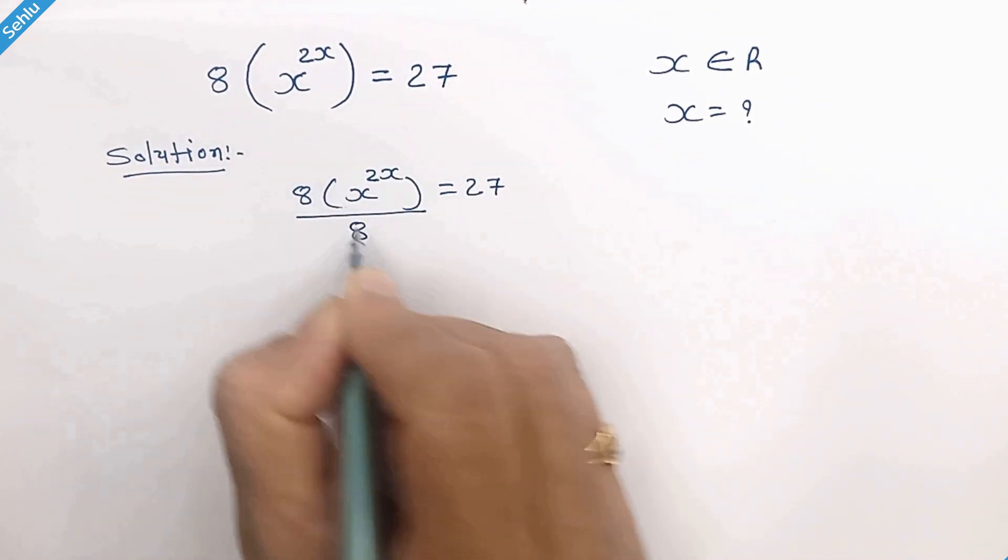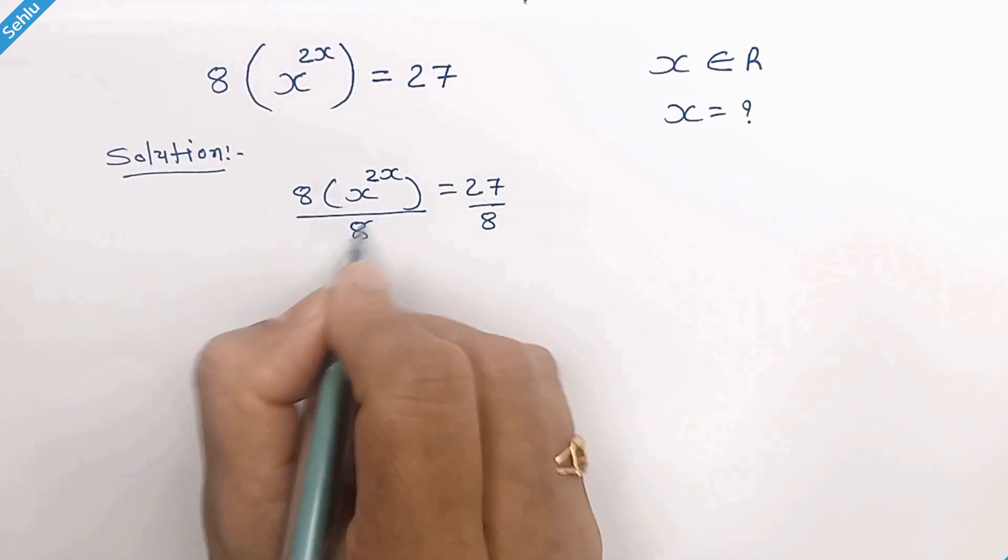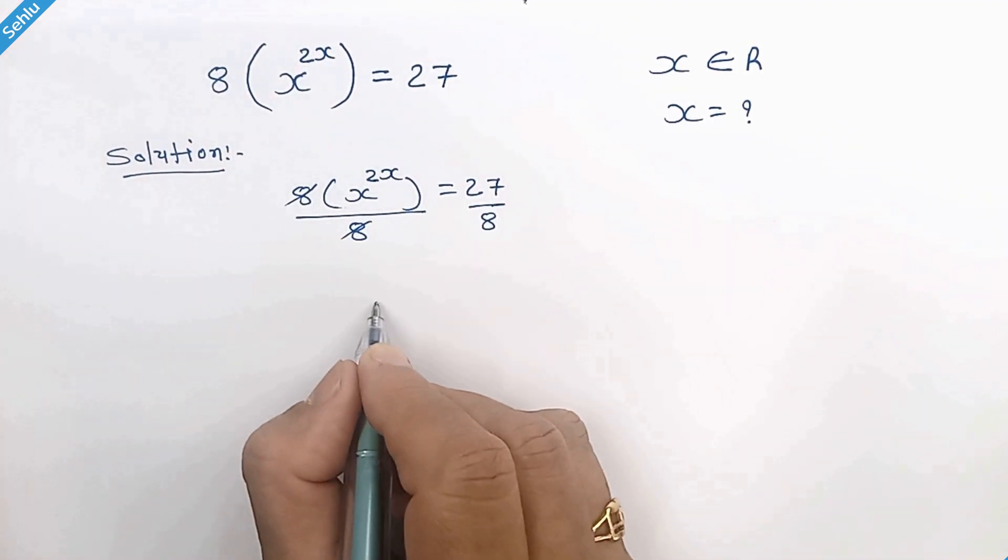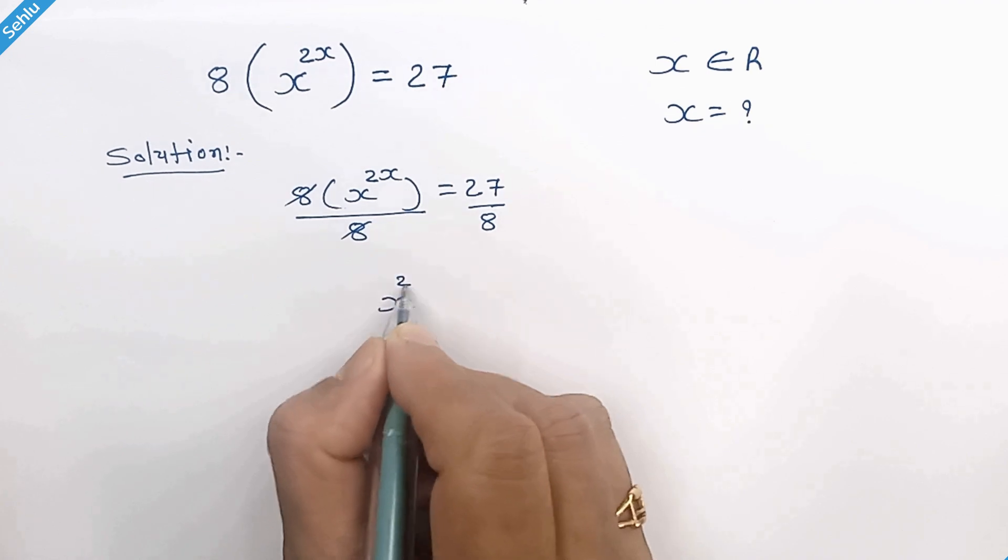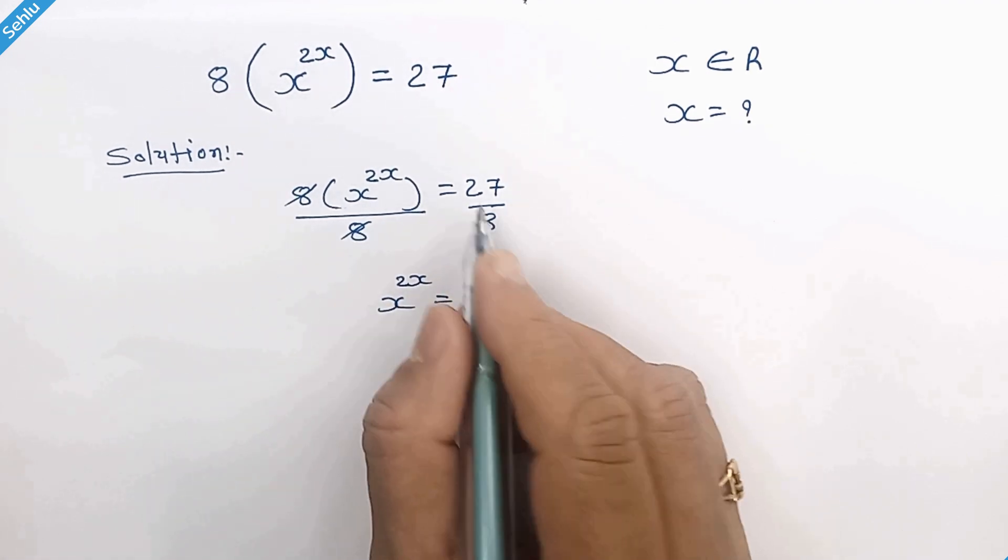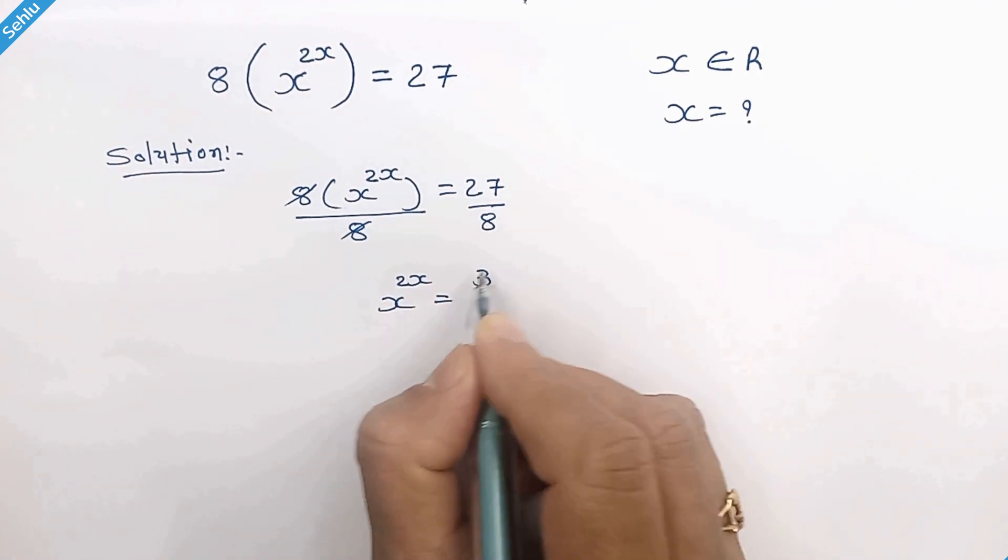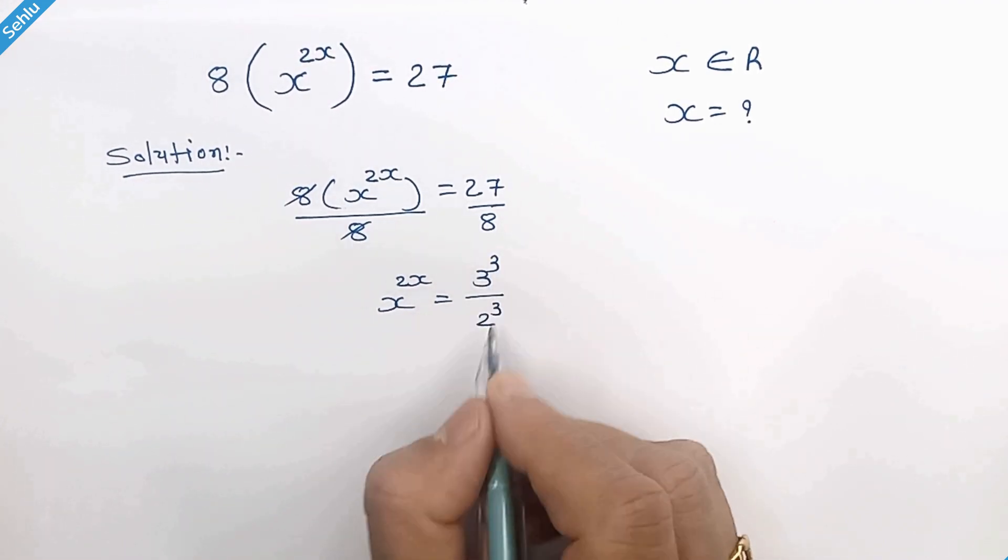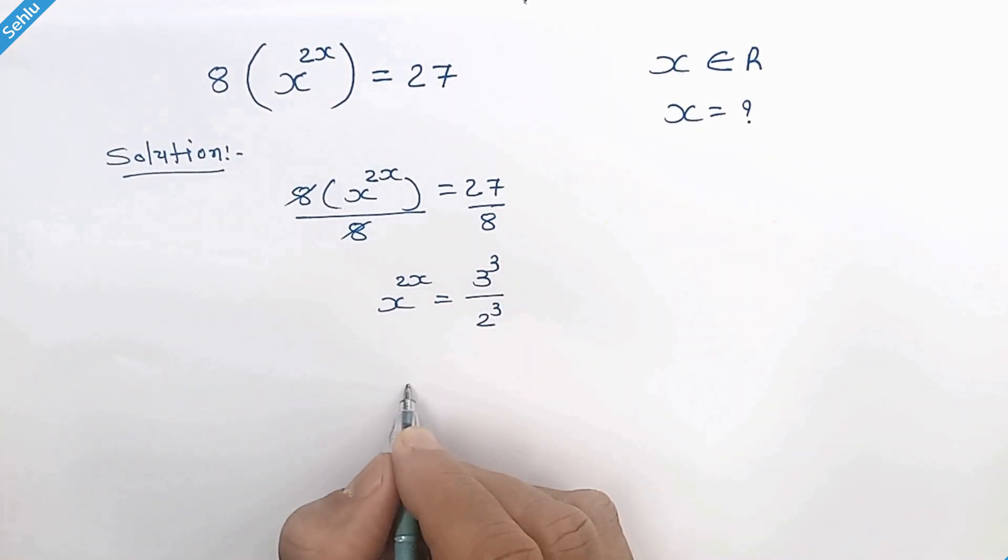In the first step we will divide by 8 both the sides. So these 2 will be eliminated. Now we have x to the power 2x is equal to 27 is 3 cube and 8 is 2 cube. It's the same exponent so we can combine them.